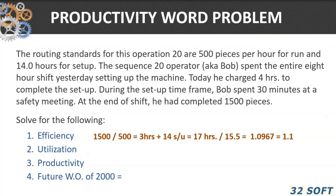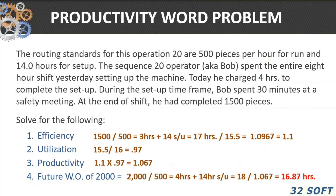Looking at efficiency, it's 1,500 pieces divided by the standard, giving us 17 hours divided by 15.5 hours — that's about 110 percent efficiency. For utilization, taking 15.5 hours against the two days we were supposed to work gives us 97 percent utilization.